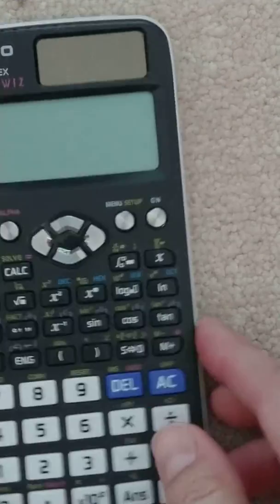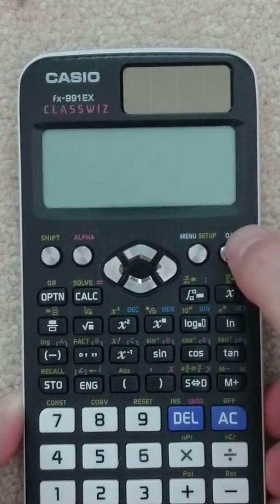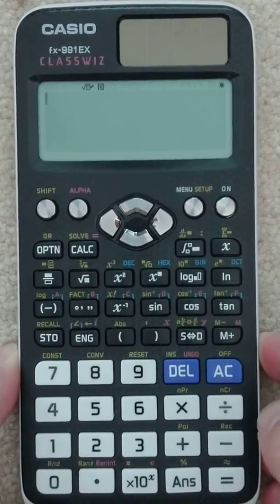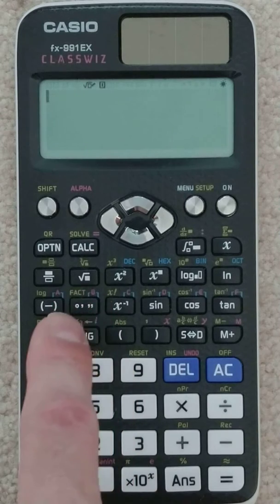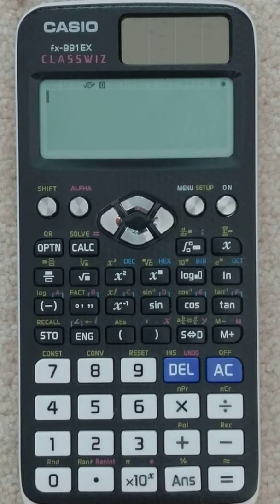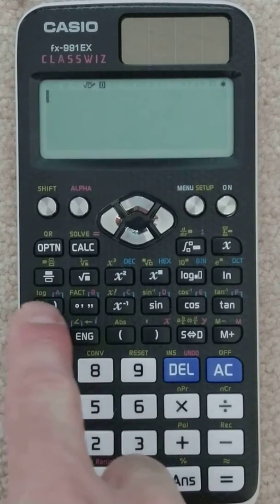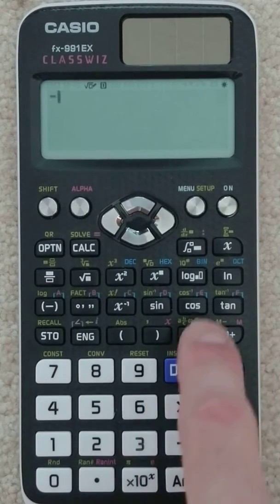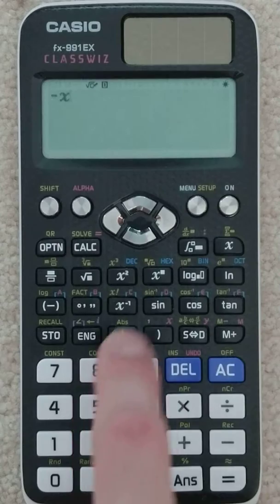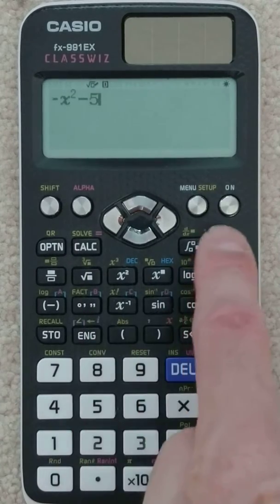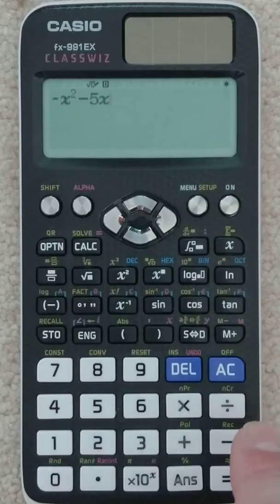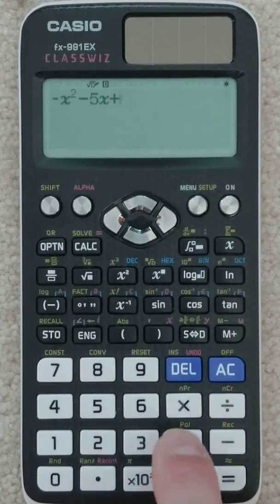So bring our Casio over here, turn it on. The Casio has a function specifically for this called calc. So what we're going to do is put in the function, so it was negative x squared minus 5x plus 33.